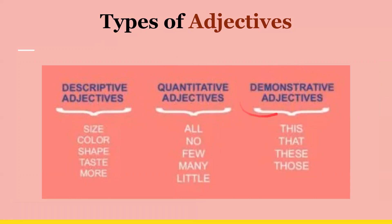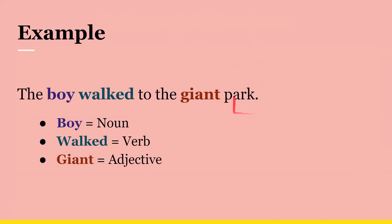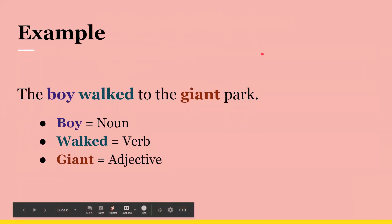Then we have demonstrative adjectives: this, that, these, and those. Here's an example. So we have the boy walked to the giant park. The boy is our noun. Walked is the verb. And giant is an adjective. And if you want extra credit, you could also say that the park is also a noun, because it is a place. The boy is a person. Walked is an action. And giant is a descriptive word. The, to, and the are none of them — they're just words.